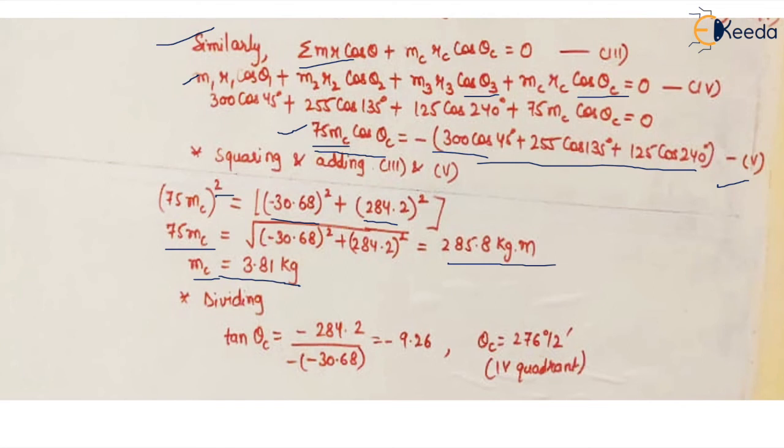The equation was 75 mc sin theta upon 75 mc cos theta. So what happens is 75 mc being the common factors they get cancelled out and what we are left with is the tan factor which is tan theta.